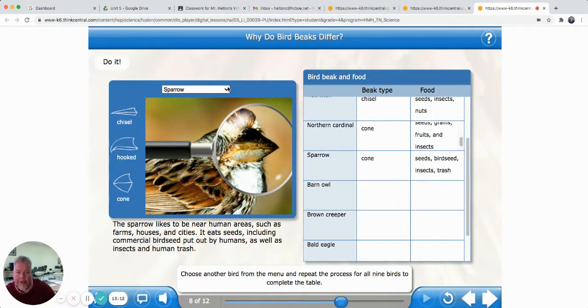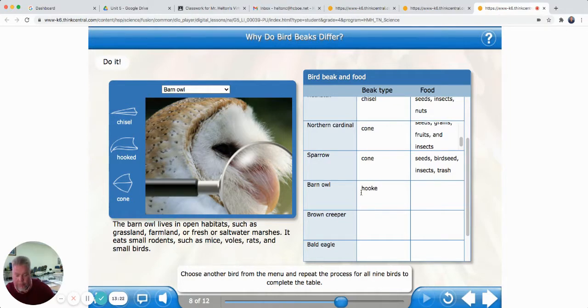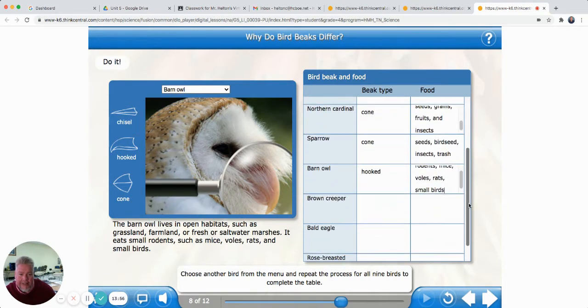Now, let's go to the barn owl. Barn owls are pretty, aren't they? It's like a hook, doesn't it? The barn owl has a hooked beak. Let's see what kind of food it eats. The barn owl lives in open habitats, such as grassland, farmland, or fresh saltwater marshes. It eats small rodents. Mice. Voles. Rats. Small birds. I think I saw a pattern with the hooked bill, didn't you? They're the only ones that are not eating seeds and stuff. They're eating other animals.